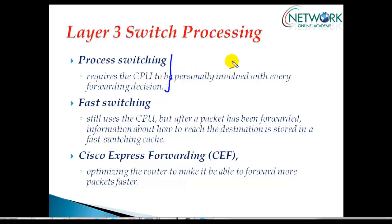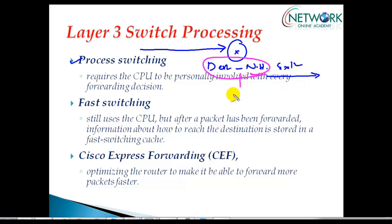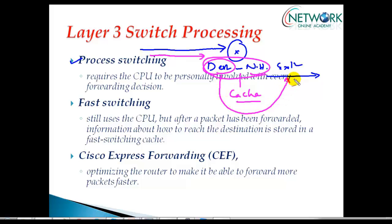This adds overhead on the router or multilayer switch. Then came fast switching. In fast switching, the same job happens as in process switching — whenever a packet arrives, it checks the destination network ID, next-hop IP address, and exit interface, then forwards the packet. After that, it caches this information in the router cache so that if another user wants to go to the same destination, it doesn't need to perform the routing lookup again.